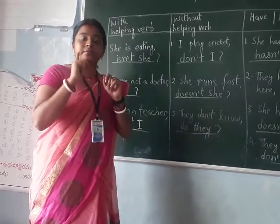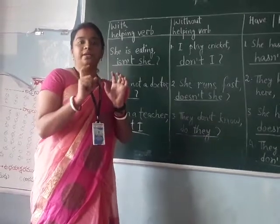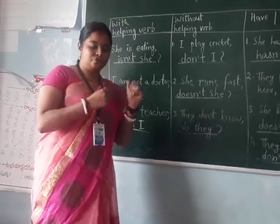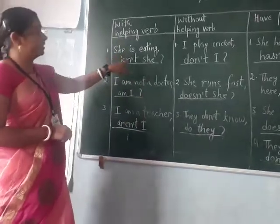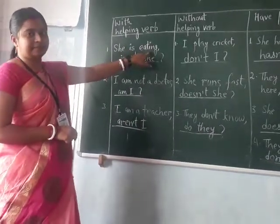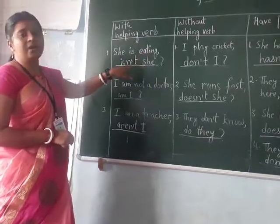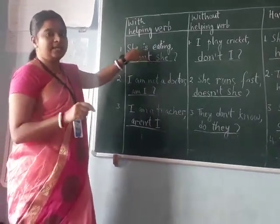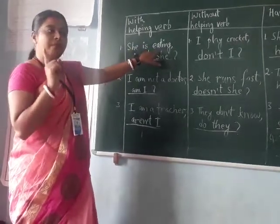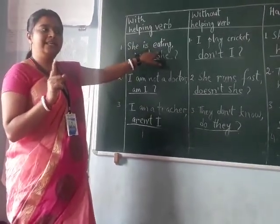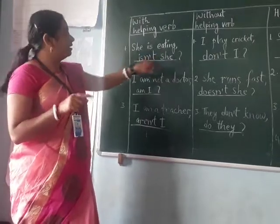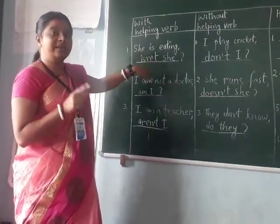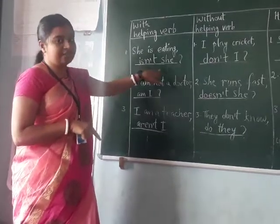The first word, which is the helping verb, it can be positive or negative. The first question is: 'She is eating.' When we have to add a question tag, you see the sentence is positive. If the sentence is positive, we will give a negative question tag. So the answer is 'isn't she?' As it is positive, we will write negative question tag — isn't she?